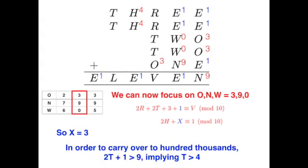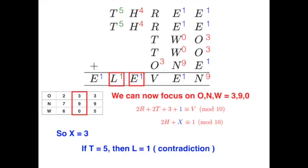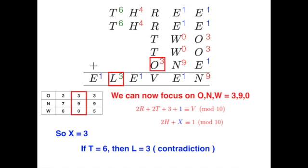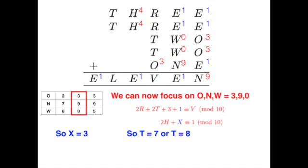As before, T must be greater than 4, so we can manually test a few cases here. If T is 5, then L is 1, which is a contradiction, since 1 is already represented by E. If T is 6, then again, we have a contradiction, since 3 is already represented by O. So T must be either 7 or 8.